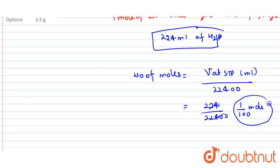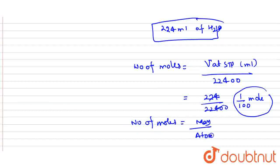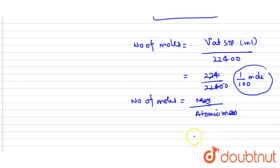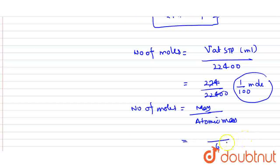So this will be the moles of hydrogen. In this case, we will use the number of moles formula: mass upon atomic mass. Mass upon atomic mass.